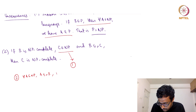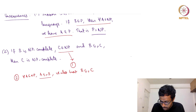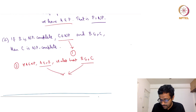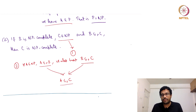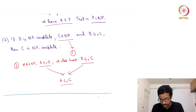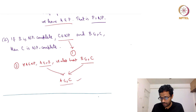We also know that B reduces to C. So we have A reduces to B and B reduces to C. Together these imply that A reduces to C — by transitivity of reductions, which I mentioned in the previous lecture. This means that for all A in NP, A is reducible to C in polynomial time, which is condition 2. So condition 2 is also verified.